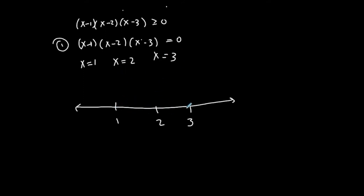The first question is: am I including these points in my solution set? I go back to the inequality symbol, and it says greater than or equal to. That means I'm including everything that makes the left-hand side greater than the right-hand side, but also equal to it. These are the values that make the left equal to the right, so I put shaded circles on those values — they're part of my solution set.